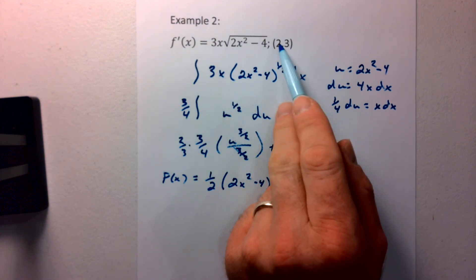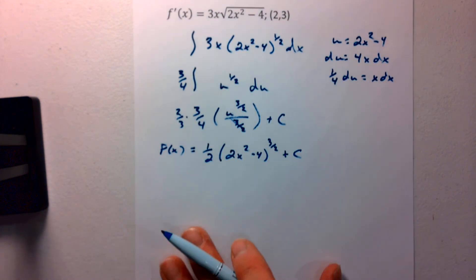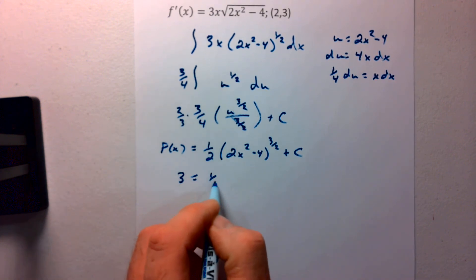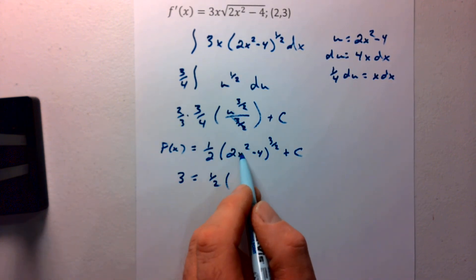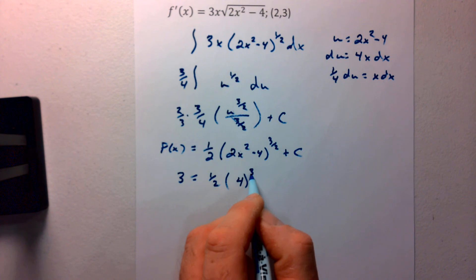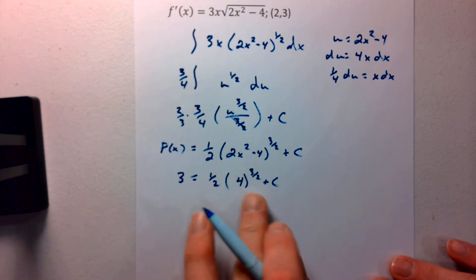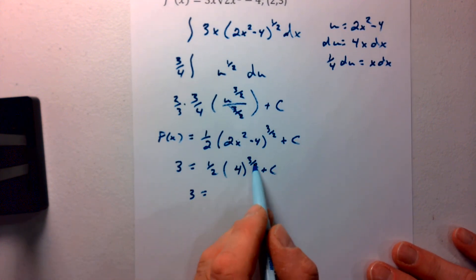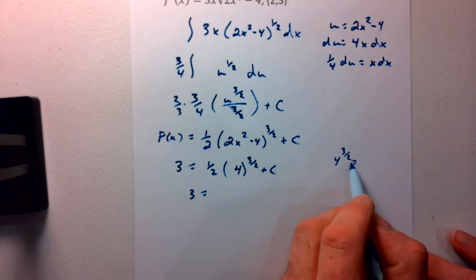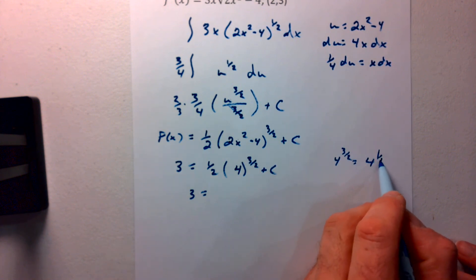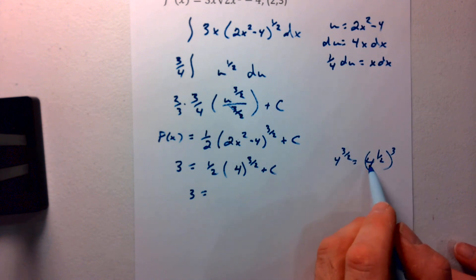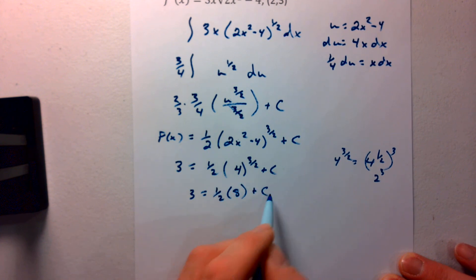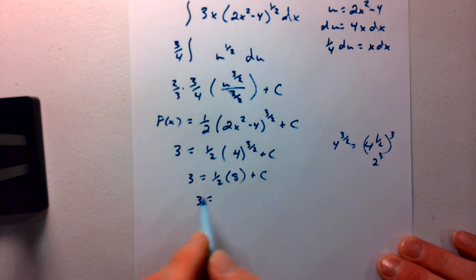Well, I know that if I plug in 2 for x and 3 for y, I can go ahead and find my c value. So 3 equals 1 half of, we have 2 squared, which is 4, times 2, which is 8, 8 minus 4. And that gives me 4 to the 3 halves plus c. 4 to the 3 halves, I can write that as 4 to the 1 half to the third power. 4 to the 1 half is 2, and 2 to the third gives us 8. So I have 1 half of 8 plus c. We end up with negative 1 equals c.